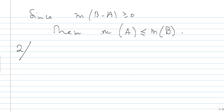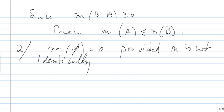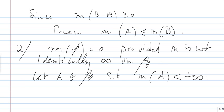Two, we want to show that M of the empty set is zero, provided M is not identically infinite on A. Because we may have M of A equal to infinity for all elements A in the subfamily A.